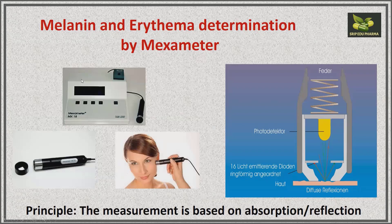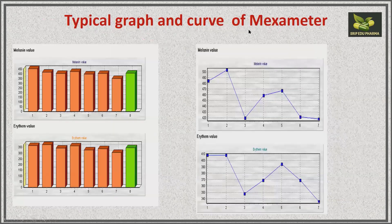For melanin and erythema determination, this is the mexameter MX18 instrument and its probe. In the diagram, there is a photodetector and light is emitted at different wavelengths to obtain melanin and erythema levels. In a single application, you can get values for both melanin and erythema. The typical graph shows seven readings with the eighth being the average, and a corresponding curve is also obtained.